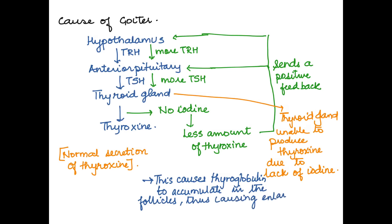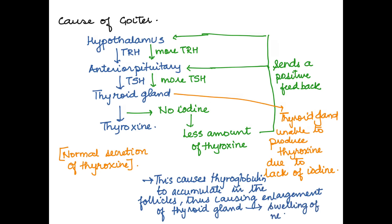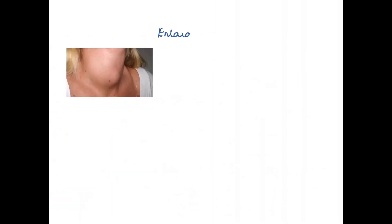Since iodine is absent, the follicle starts to enlarge due to the accumulation of more thyroglobulin. This results in enlargement of the gland and swelling of the neck, which causes goiter.